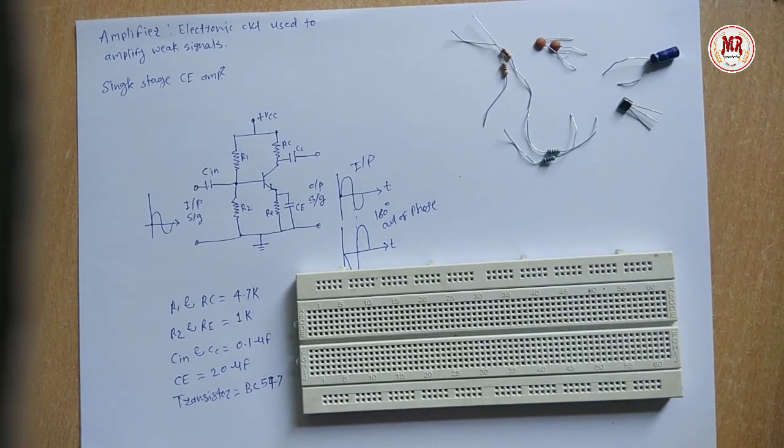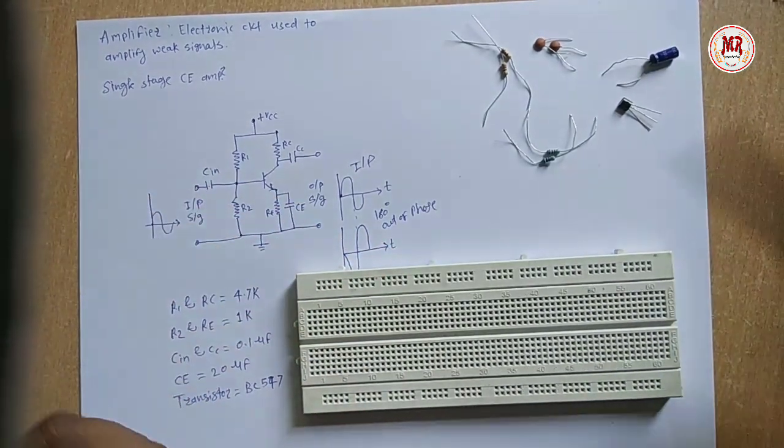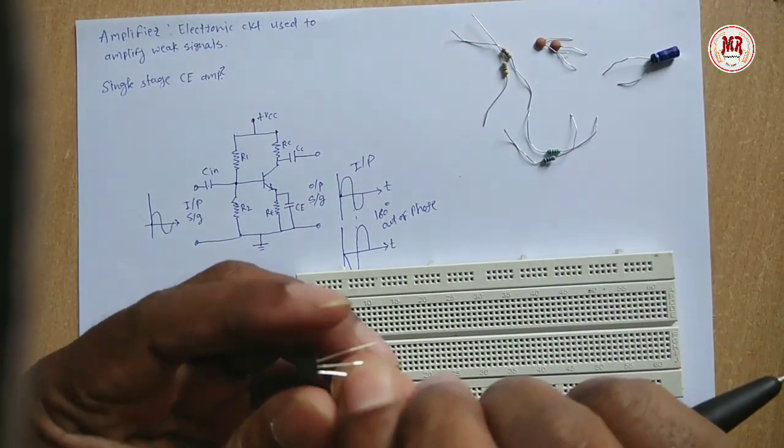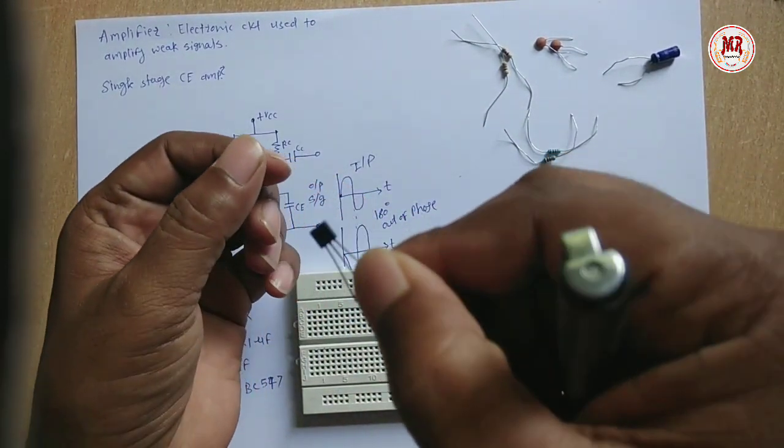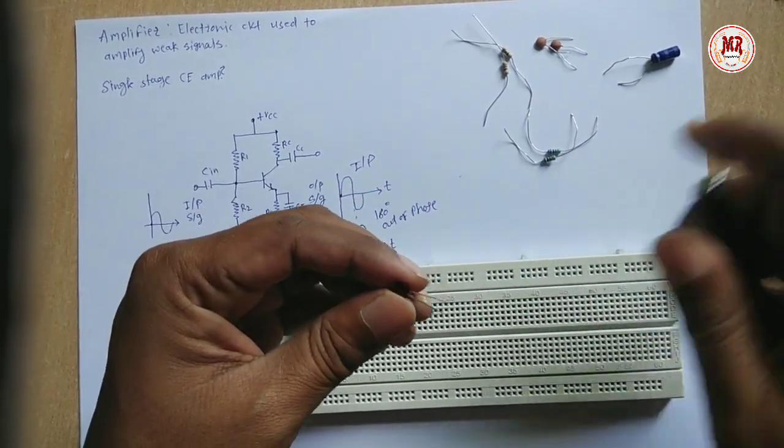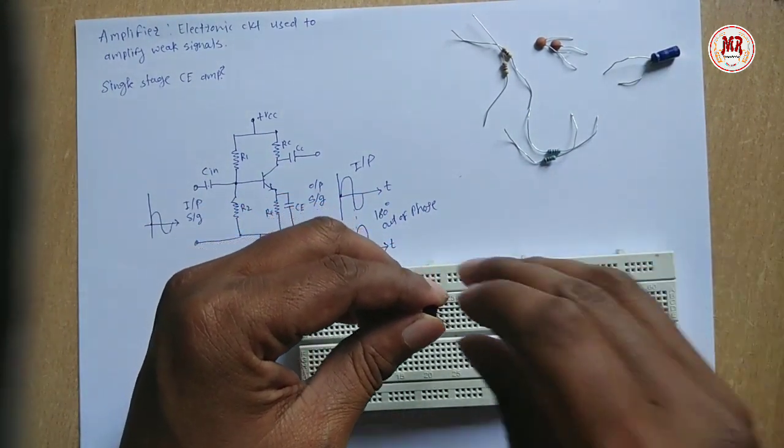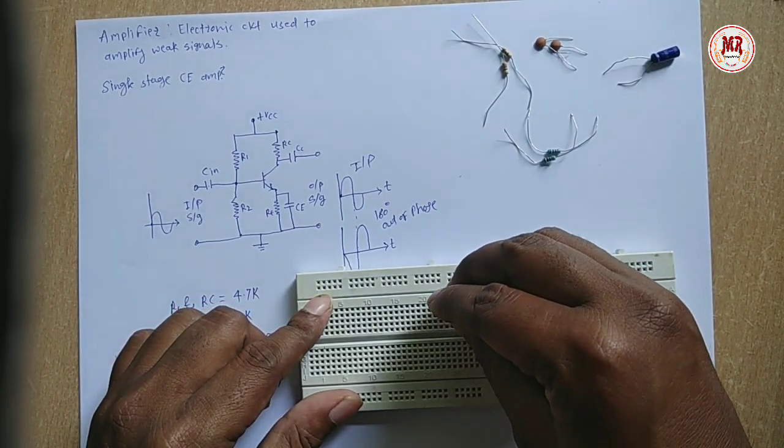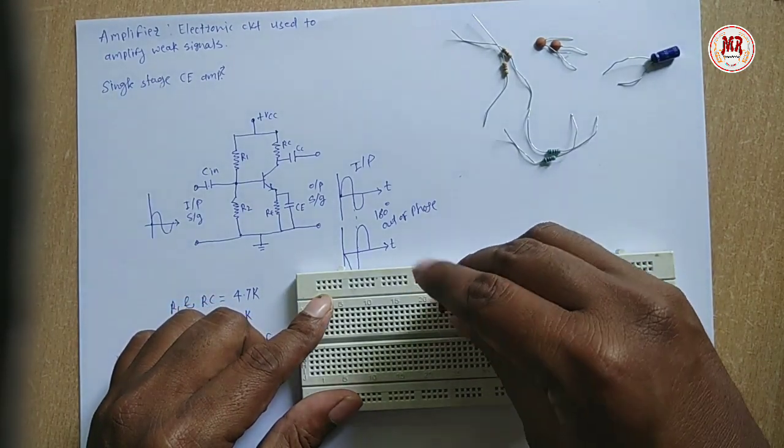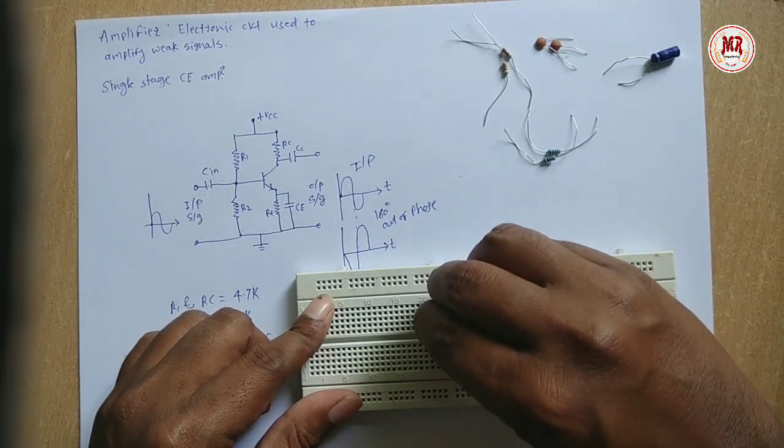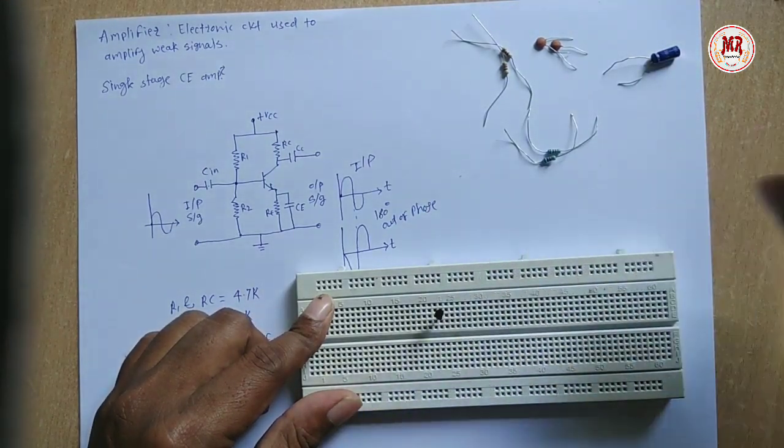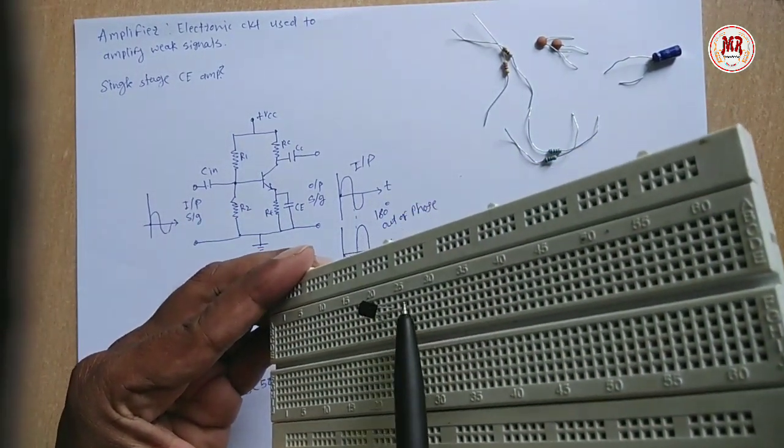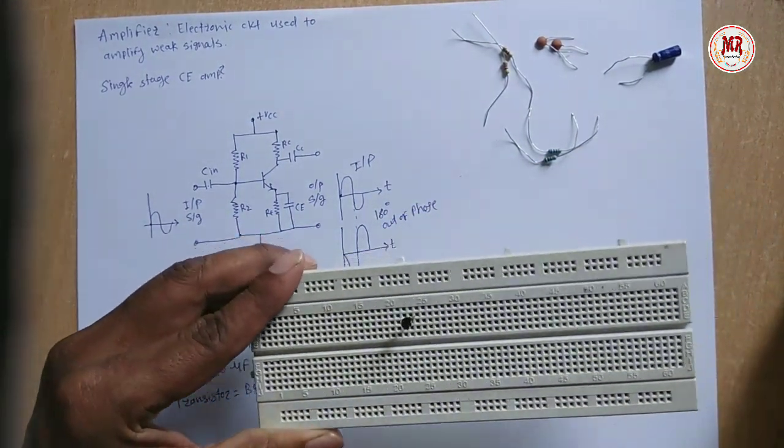Let's build the circuit on breadboard. First transistor. Identify the terminals. Collector, base and emitter.